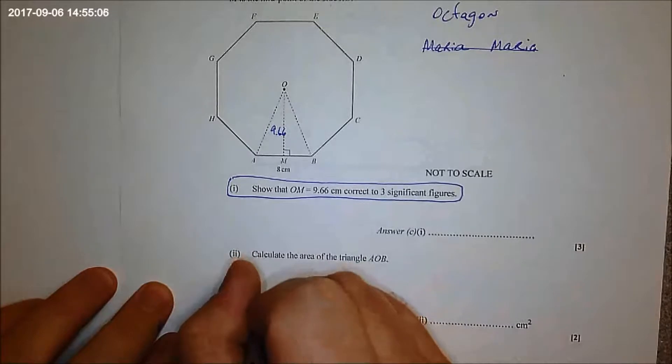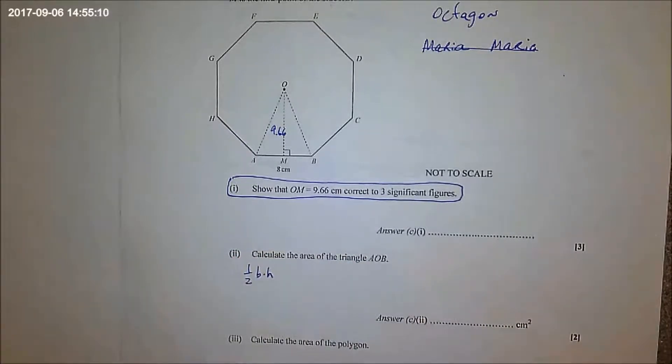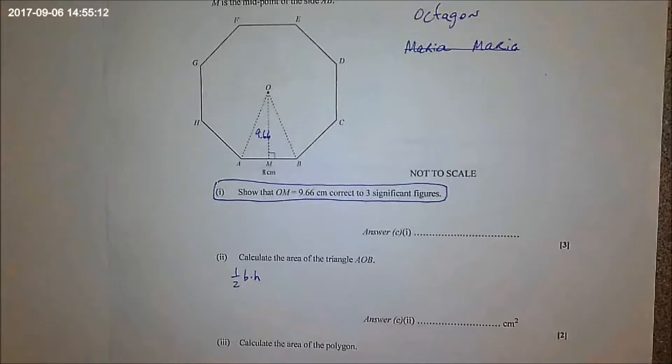So it's one-half base times height right? Okay now the tricky thing is what's the base? Eight. Four. What? Or it could be eight, you could do twice of it right? Or is it four? Or is it eight? Or is it four? It's eight?